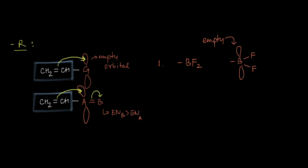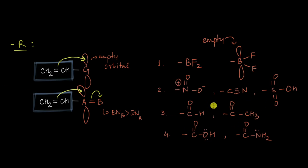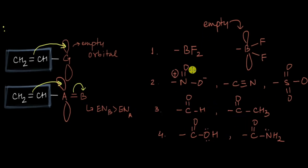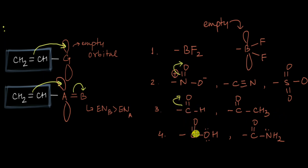Typically, the -R groups look something like this. In all these groups, we have a pi bond that can be moved to the more electronegative element, creating an empty orbital on the surrounding atom which can then pull electrons from a double bonded system. For example, in the aldehyde group or the carbonyl group, we can move the pi bond to the more electronegative oxygen atom, creating an empty orbital on the surrounding carbon which can then withdraw electrons from an attached pi system.